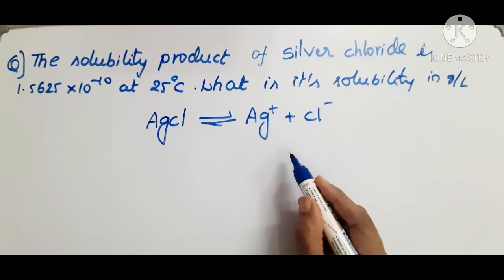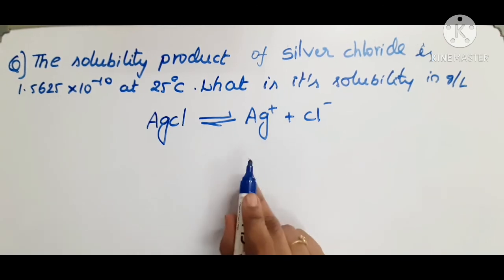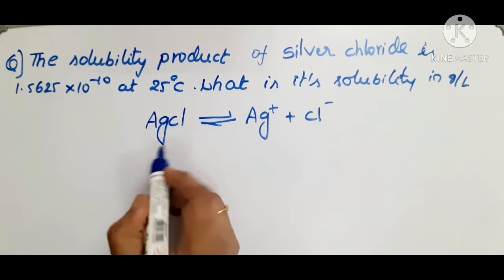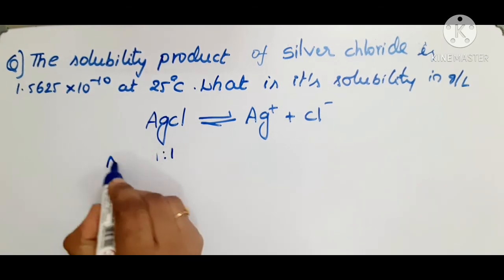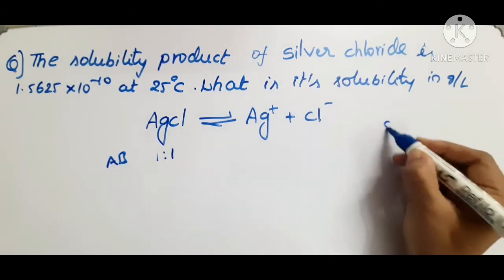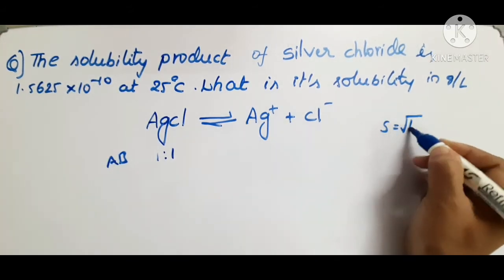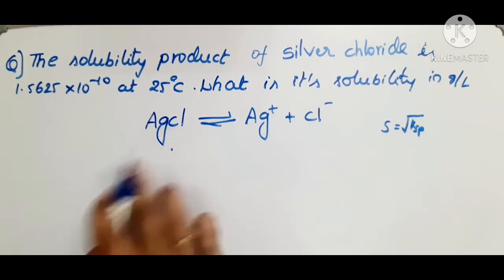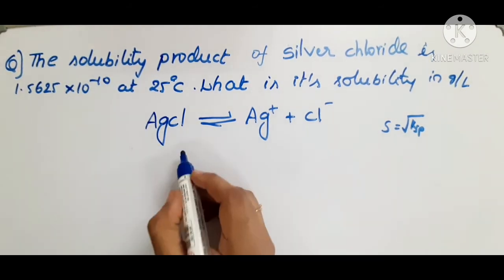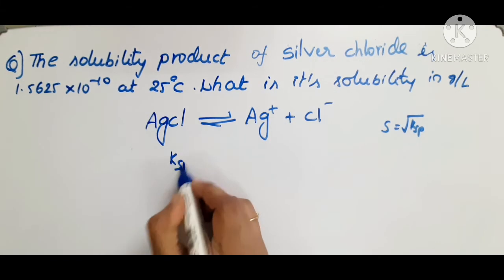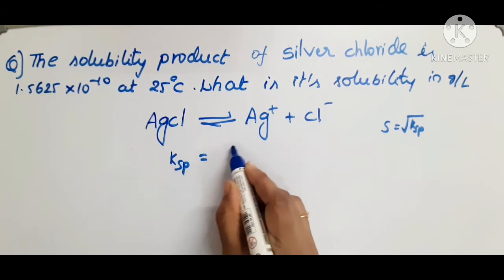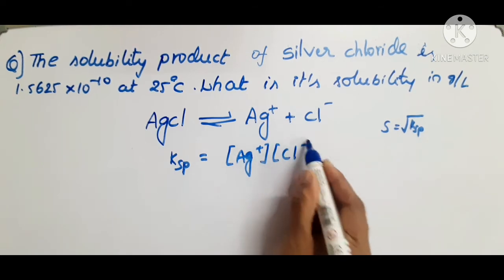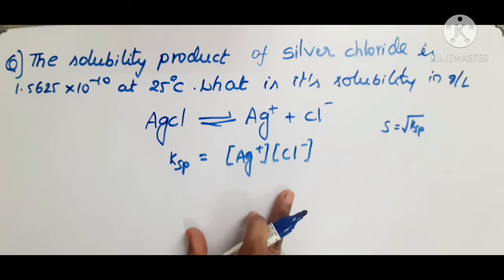What is the relation between solubility and solubility product for this type of electrolyte? It is a 1:1 ratio — an AB type electrolyte. The relation is S = √Ksp. The solubility product expression for silver chloride is Ksp = [Ag⁺][Cl⁻].